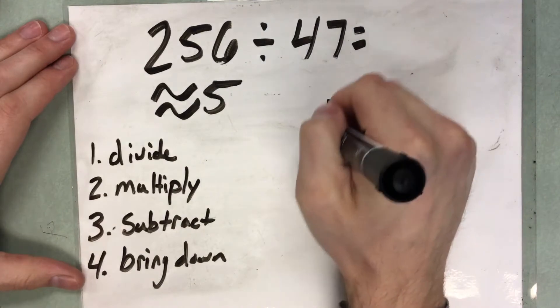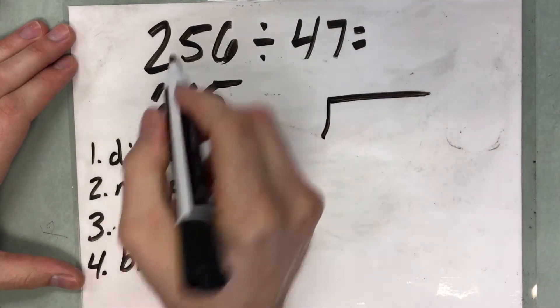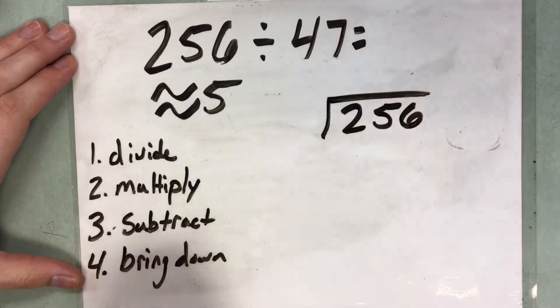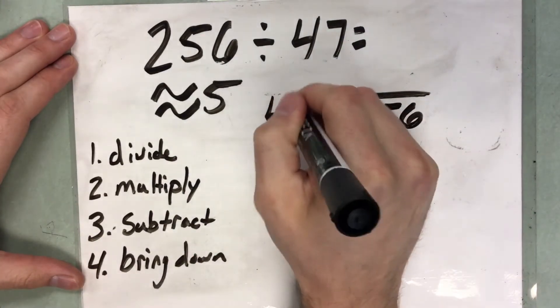So let's start by setting up our written method. The dividend goes in the house, or our whole. That is 256. And then our divisor goes on the outside.